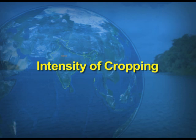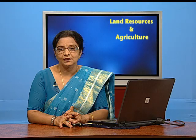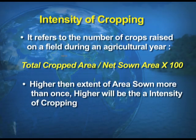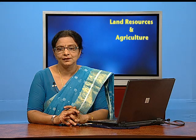The last part for this section of the chapter is the intensity of cropping, which is very important because we have a shortage of land and we have to improve the intensity of cropping. It refers to the number of crops raised on a field during an agricultural year. It is calculated as: total cropped area divided by net sown area, multiplied by 100.